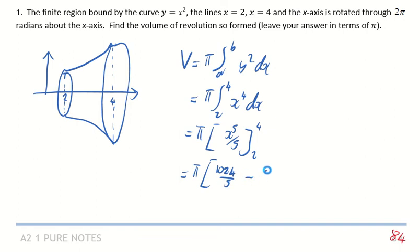And then 2 to the power of 5 is going to be 32 over 5, and if you do that out,